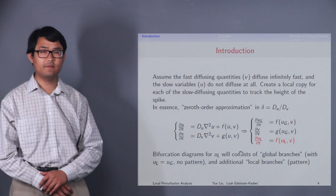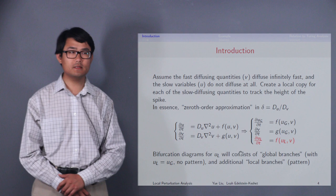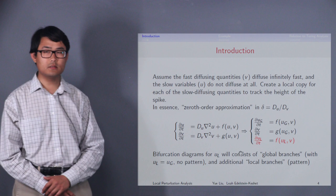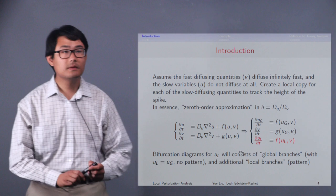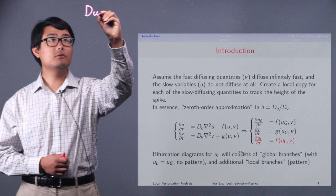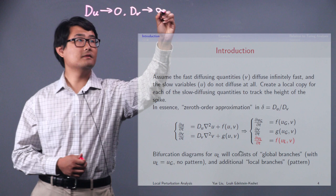For LPA, we assume that the fast diffusing quantities, that is v in our case, diffuse infinitely fast, and the slow diffusing quantities, that is u, does not diffuse at all. Which means that in LPA, we take the limit of du going to zero and dv going to infinity.